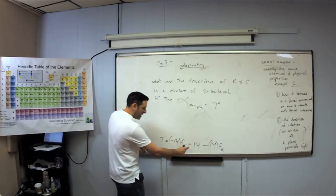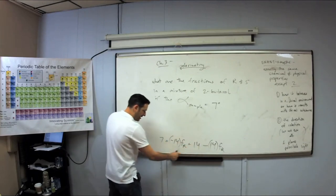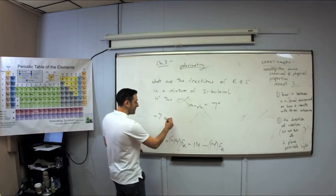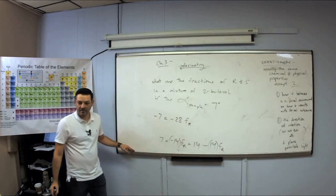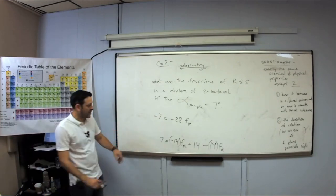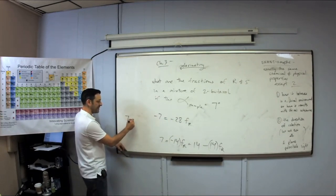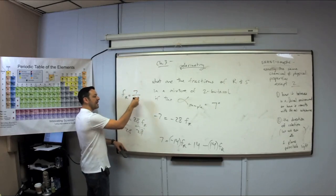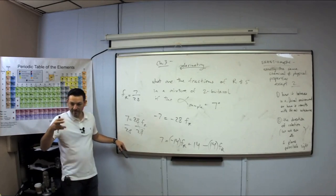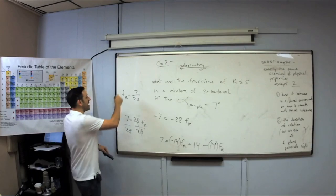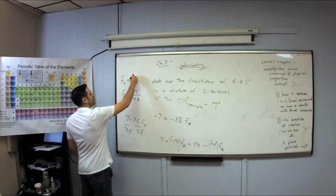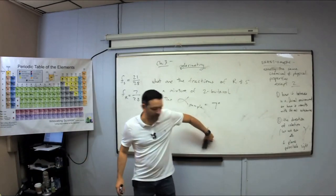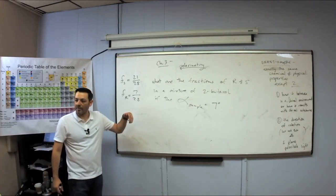We solve it: bring the 14 to this side — 7 minus 14 is negative 7, equals negative 14 times (fraction of R) plus negative 14 times (fraction of R), which gives negative 28 times (fraction of R). Getting rid of the negatives: 7 equals 28 times (fraction of R). Divide both sides by 28, and the fraction of R is 7 out of 28. Which means I can immediately say the fraction of S is 21 out of 28. We can then discuss what percent is racemic and what percent is pure.